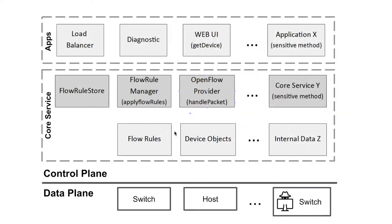In order to break the barrier, we propose a new attack, D2C2, which can leverage some SDN protocol features to create and train unexpected data dependencies in the control plane component. It allows a weak adversary who only controls the commodity network device to exploit previously unreachable methods in the control plane.